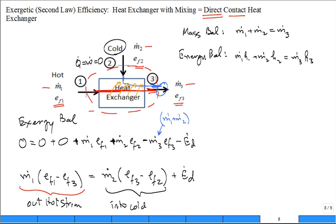Or it gets destroyed. Can you give me a good exergetic efficiency for this direct contact heat exchanger? What do we really want, and what do we have to pay for? What drives the thing? What is the expense? The expense is coming out of the hot stream. And what do we want? We don't want destruction; we want as much of that to get into the cold stream.